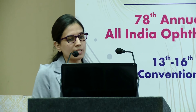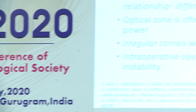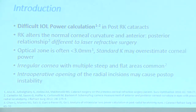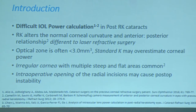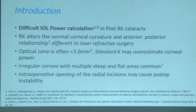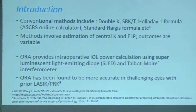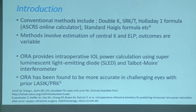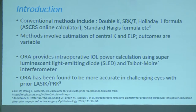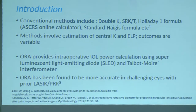Post-RK cataracts have difficult IOL power calculation. RK alters the normal corneal curvature and anterior-posterior relationship — this alteration is different from laser refractive surgery. The optic zone is generally less than 3 mm, standard K will overestimate the corneal power resulting in eventual hyperopia. Irregular corneas with multiple steep and flat areas are common, and intraoperative opening of radial incisions may cause post-operative instability.